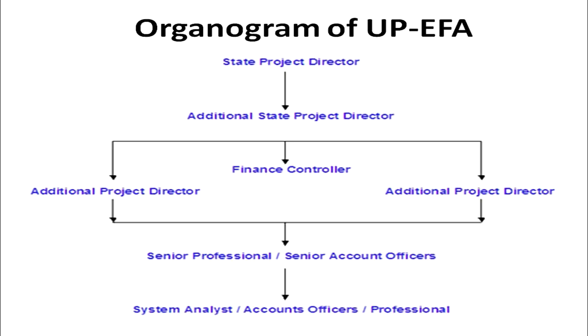In this manner, directions and guidelines reach to the grassroots level so that different interventions at the elementary level can reach the real beneficiaries — the schools, the teachers, the children, and the local community. This is the organizational structure of the Education for All project, or basic education project, in the state of Uttar Pradesh.